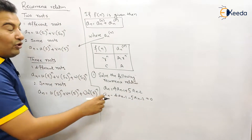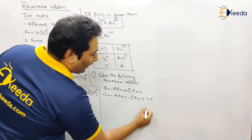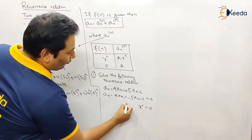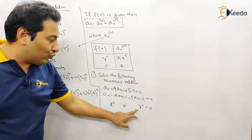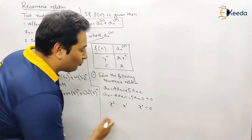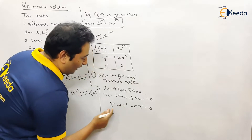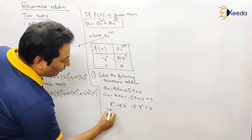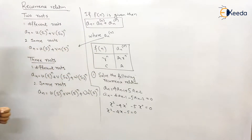We convert this recurrence equation into a quadratic equation in terms of x. The term a_(n-2) corresponds to x^0 (raised to 0... actually x^(n-2), so we use x²), a_(n-1) corresponds to x^1 (x), and a_n corresponds to x². With coefficients: -5 for a_(n-2), -4 for a_(n-1), and 1 for a_n, the quadratic equation becomes: x² - 4x - 5 = 0.